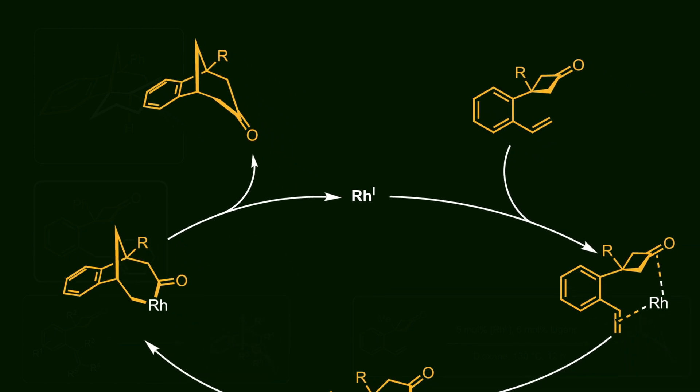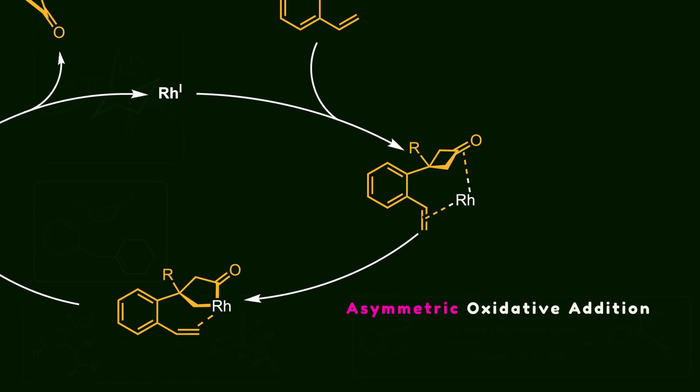Notice that the first step leads to asymmetric oxidative addition. In other words, there are two enantiotopic carbon-carbon bonds for insertion of rhodium. However, only one of them undergoes cleavage during the cut process. And this is the reason for the enantioselectivity of the reaction.